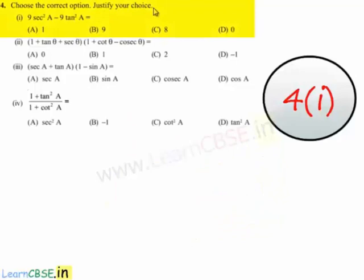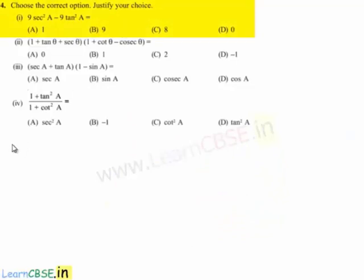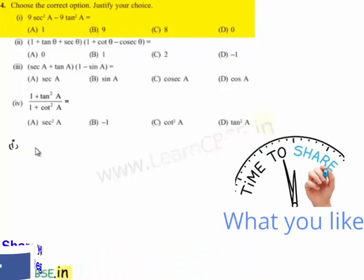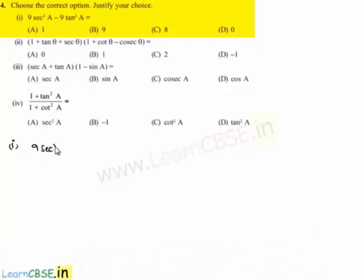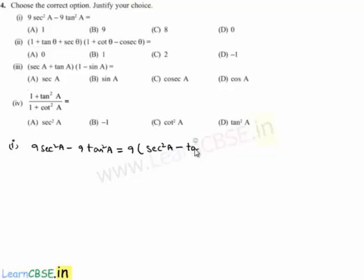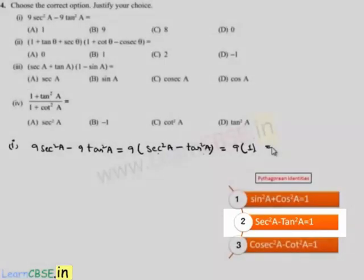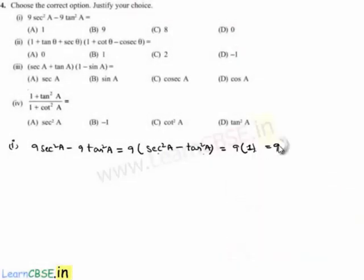Choose the correct option and justify your choice. For the first bit, the given expression is 9 secant square a minus 9 tan square a. Taking 9 common, we get 9 times (secant square a minus tan square a). Using the identity secant square a minus tan square a equals 1, this equals 9. So option b is correct.